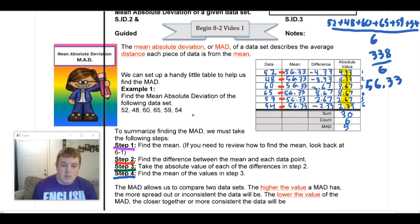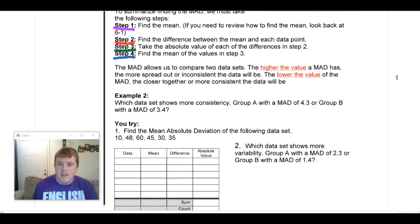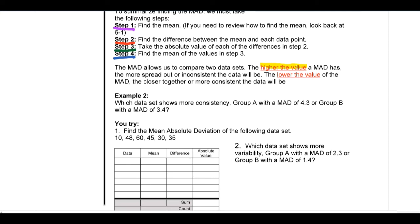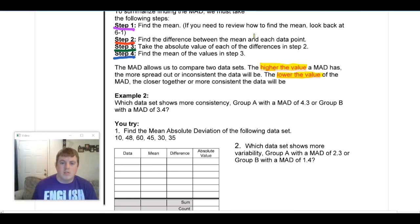So what that is going to do is give us an estimate of how close together our data set is. Now, to actually make sense of this, it makes the most sense when we're comparing different sets of values. So when we look at the MAD, the higher the value of a MAD is going to be, the more spread out and inconsistent the data is going to be. The lower the value of the MAD, the closer together or more consistent the data will be.